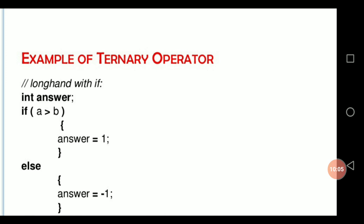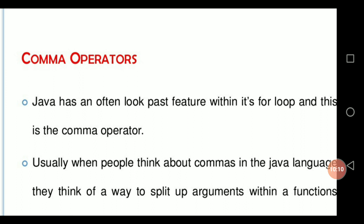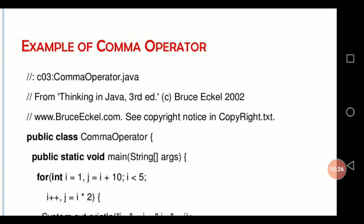The next type is called special operator. These are some common operators in all programming languages. Comma is also called a separator — it is used to separate one variable from another variable. For example: i equal to 1, j equal to i plus 10. These are separators. Sometimes we also use the terminator — in Java, C, and C++, each statement is terminated with a semicolon, so semicolons are called terminators.